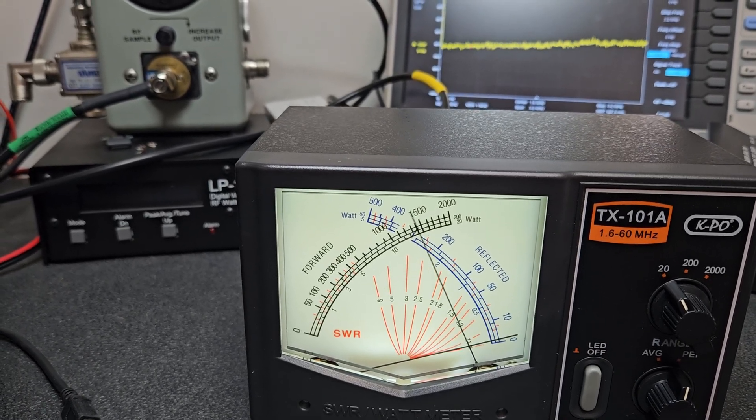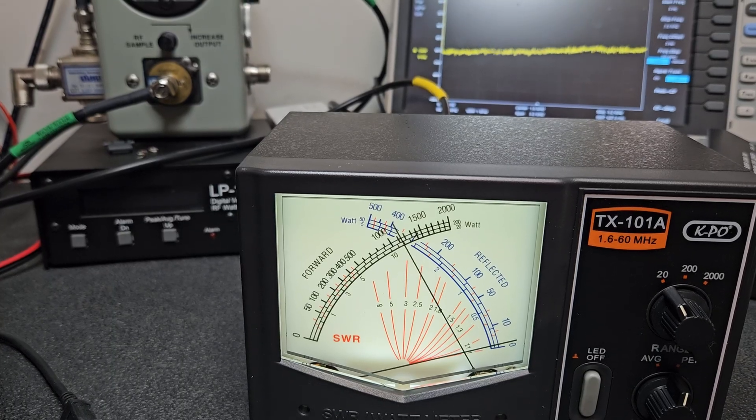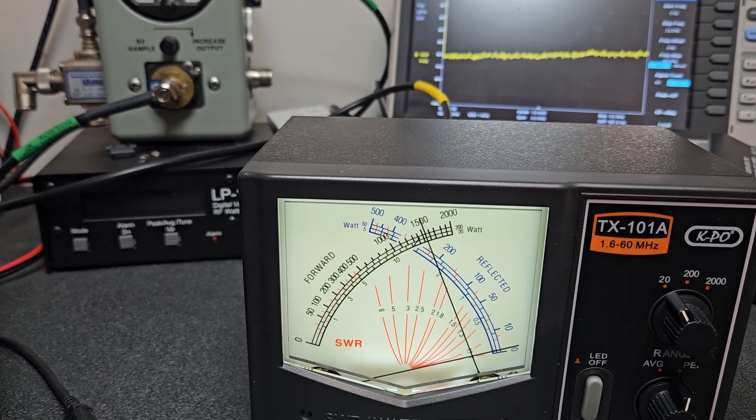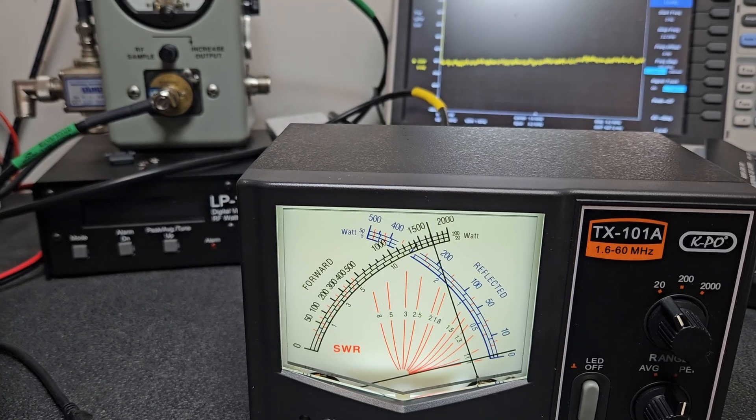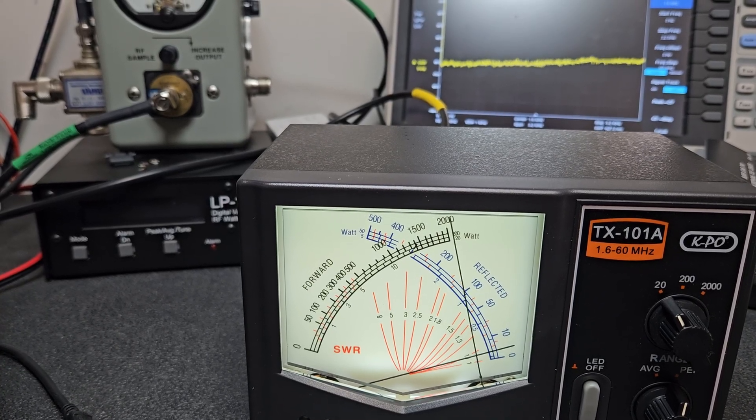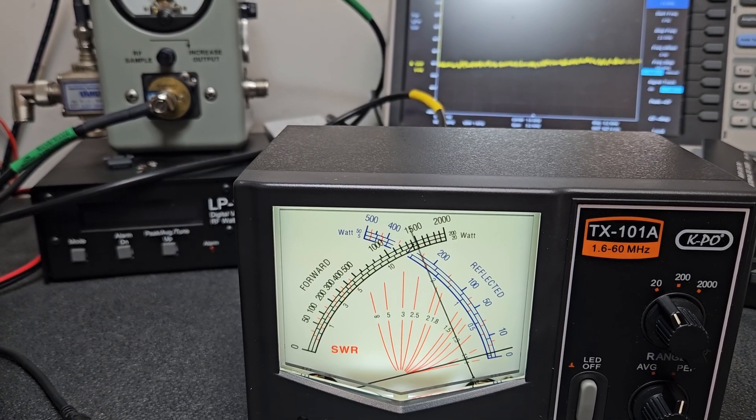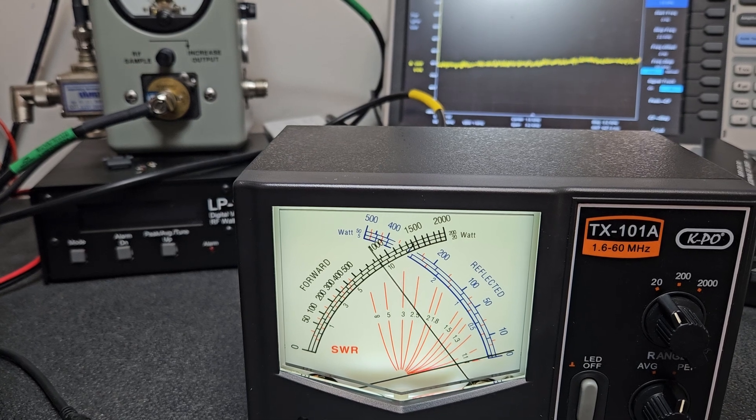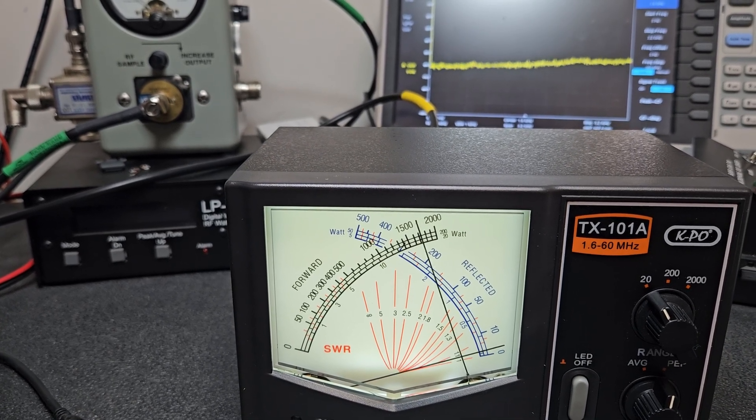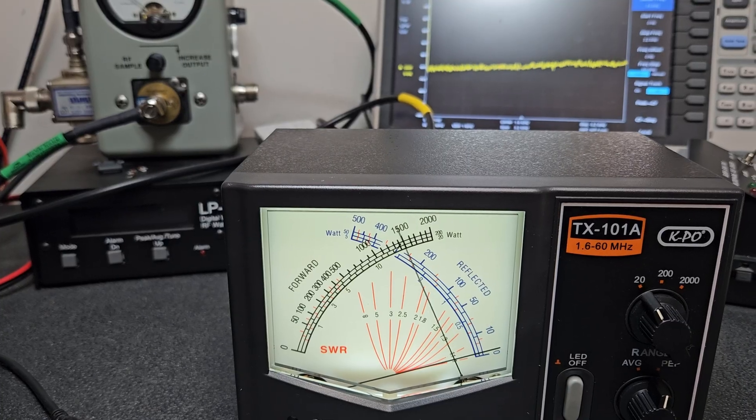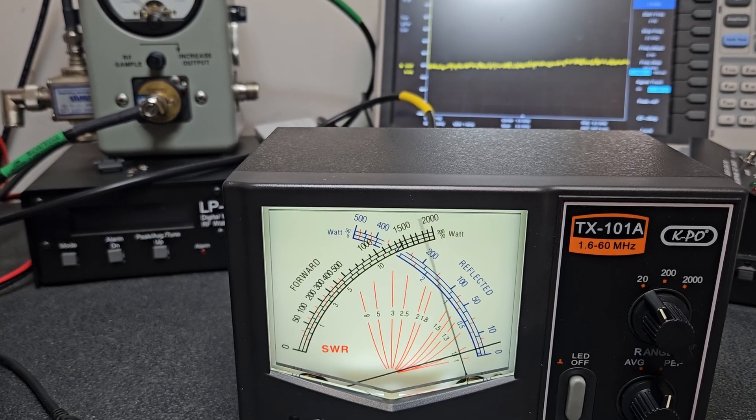You don't have to have the backlight on but it's a nice backlight. We'll go over to PEP. When I transmit, you can see we're going up there a little bit past 20, which is about right. This radio was about 20-25 watts on the peaks, so it's working good just like a nice analog cross meter would work.